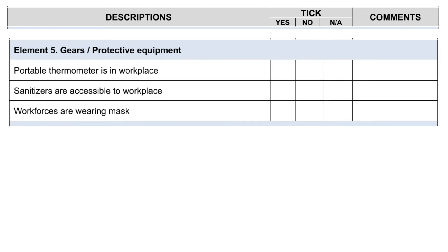Element 5: Gears and protective equipment. Portable thermometer is in workplace. Sanitizers are accessible to workplace. Workforces are wearing masks.